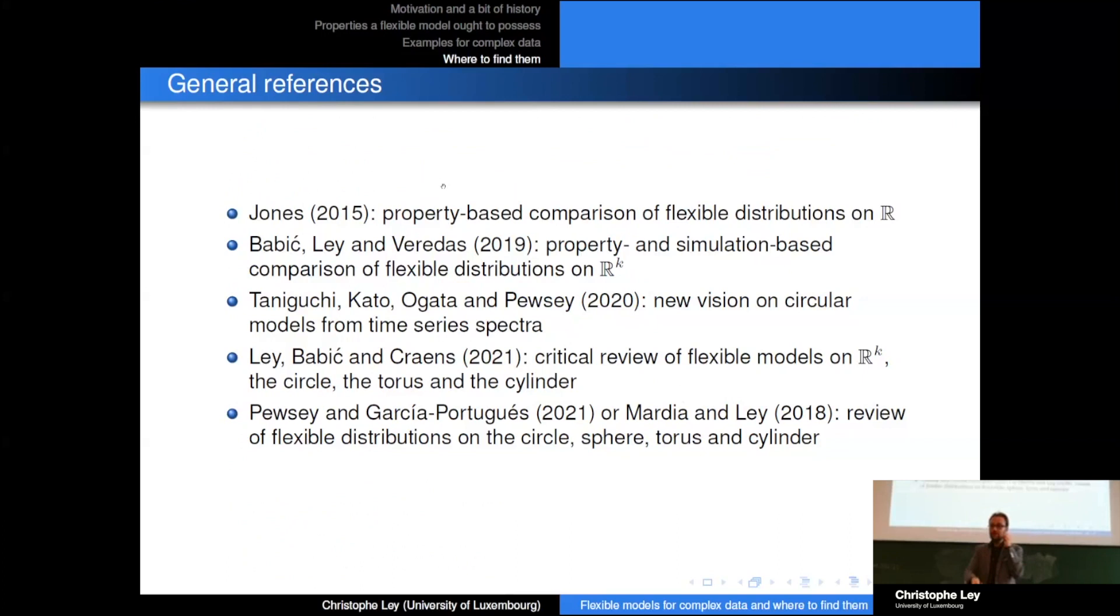This is the paper that I already referred to, where we made a critical review of flexible distributions, not only on ℝᵏ but also on the circle, the torus, and the cylinder. And then with Cantamaria I made also a review paper, but I refer you more strongly to this very nice review paper by Arthur Pewsey and Eduardo, who made a review of directional statistics in general. In this is also contained a review of flexible models on the circle, the sphere, the torus, and the cylinder.